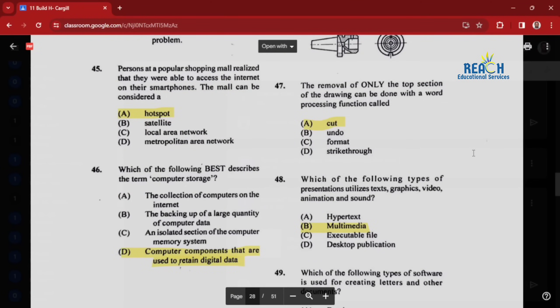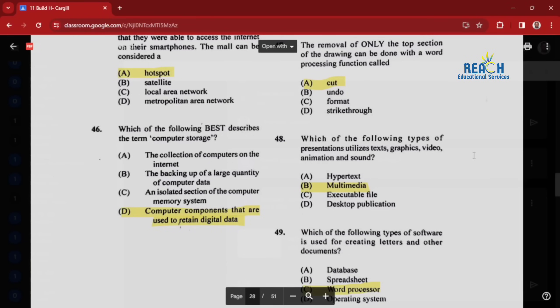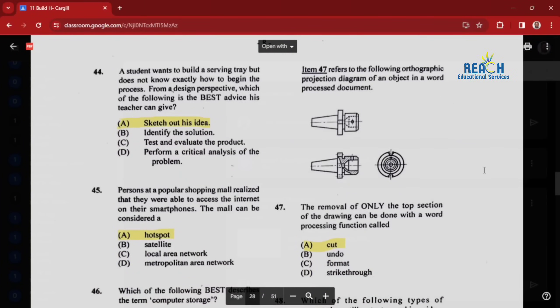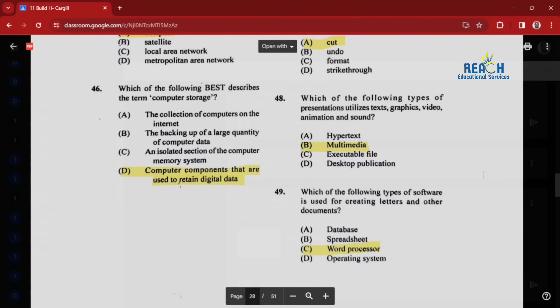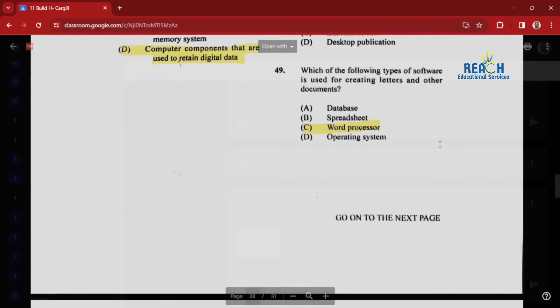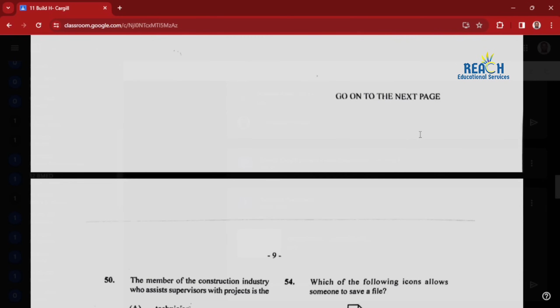Question forty-five: persons at a popular shopping mall realize that they were able to access the internet on their smartphones. The mall can be considered a hotspot. Question forty-six: which best describes the term computer storage? That would be computer components that are used to retain digital data. Item forty-seven refers to an orthographic projection diagram of an object in a word processed document. The removal of only the top section of the drawing can be done with a word processing function called cut. Question forty-eight: which type of presentation utilizes text, graphics, videos, animation, and sound? That would be multimedia. Question forty-nine: which type of software is used for creating letters and other documents? Word processor.